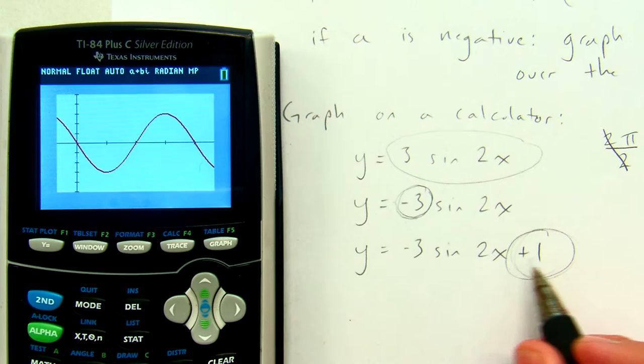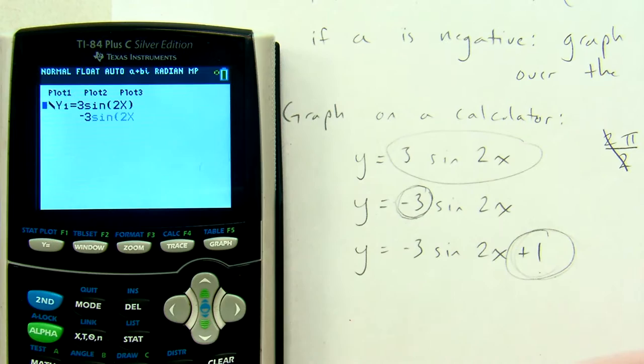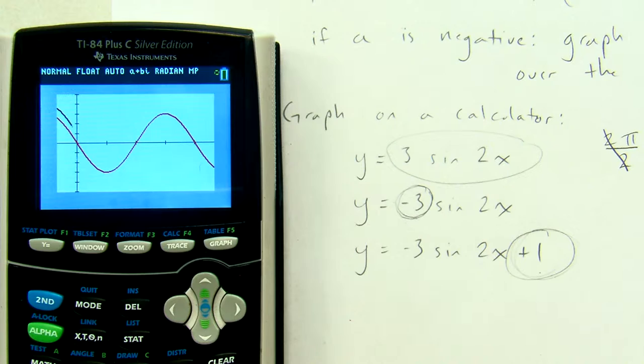Okay, so what happens if we also add k, plus k? Here I'm adding plus 1, which means the entire graph is going to move up 1. Once again, let's go ahead and leave the red one. And in black, we're going to graph negative 3 sine of 2x plus 1. And we're going to see how it looks different.